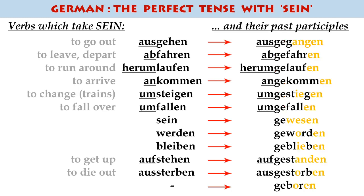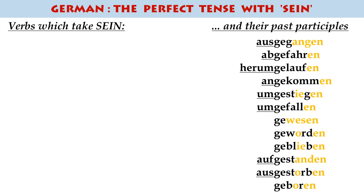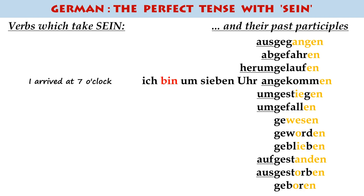All of these verbs are strong verbs. The ones I've listed here certainly all seem to be strong verbs — there are a couple that are weak or mixed — but the majority that you'll come across are slightly irregular in their past participle forms, so do make sure that you get them right. For example: ich bin um 7 Uhr angekommen — I arrived at 7 o'clock.